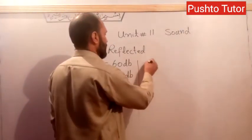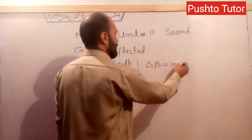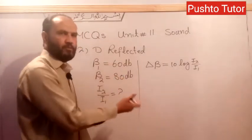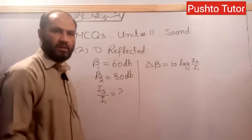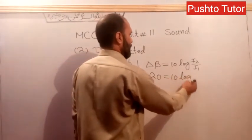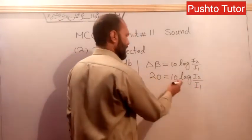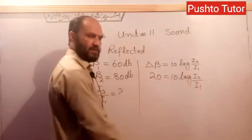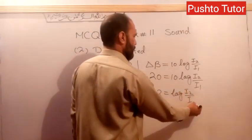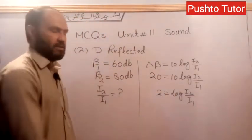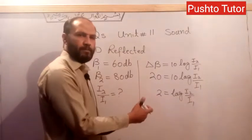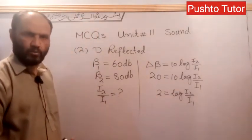Relative Intensity Level: Delta Beta = 10 log of I2 over I1. Delta Beta = 10 log of I2 over I1. We are dividing both sides by 10. So 3 equals log of I2 over I1. Taking the antilog of both sides, I2 over I1 equals 10 to the power 3, which is 1000. We are finding the antilog of the second side.